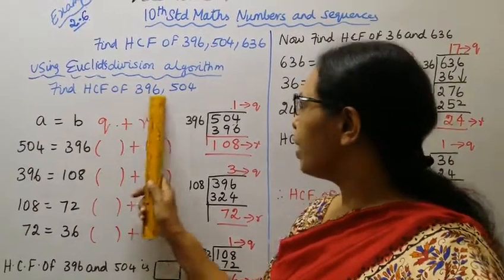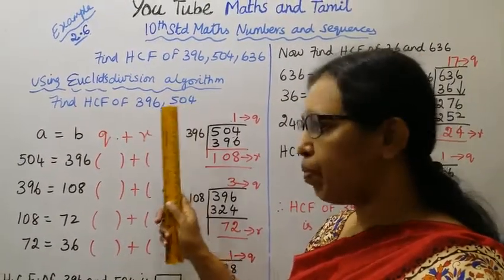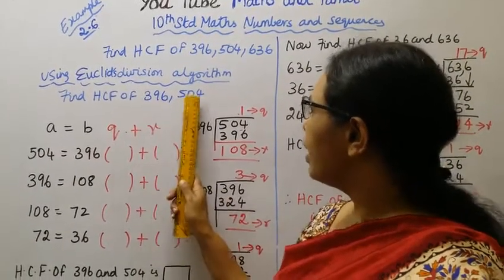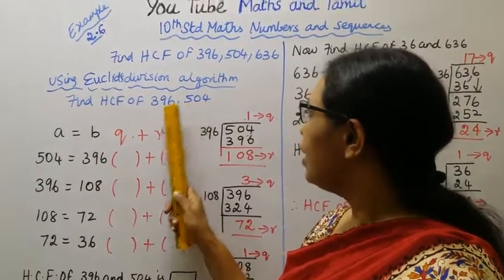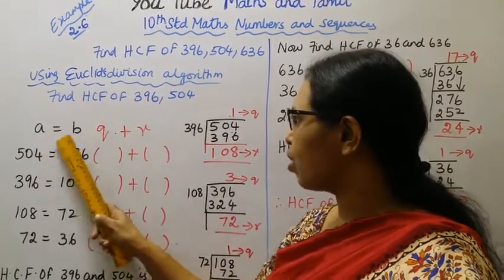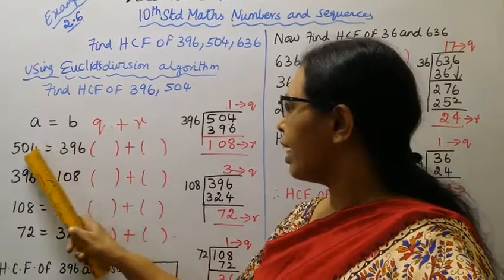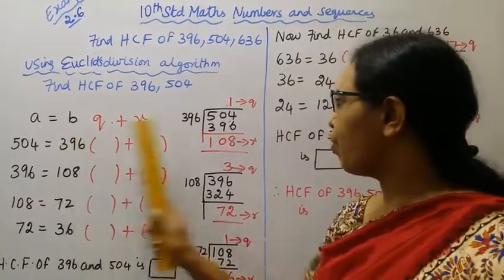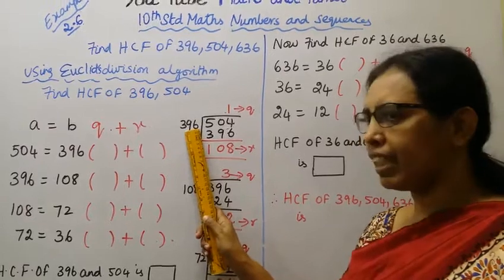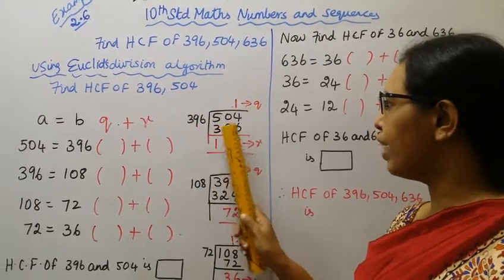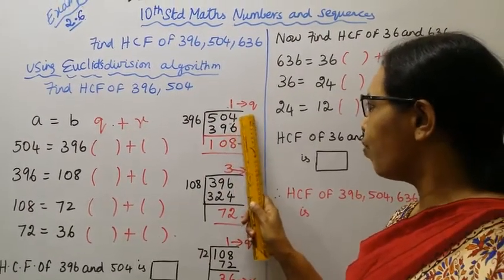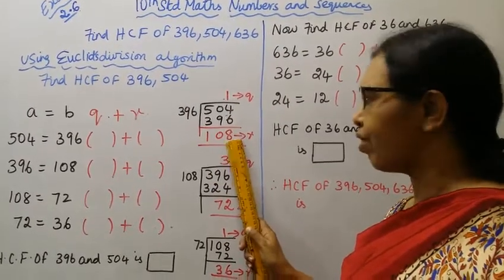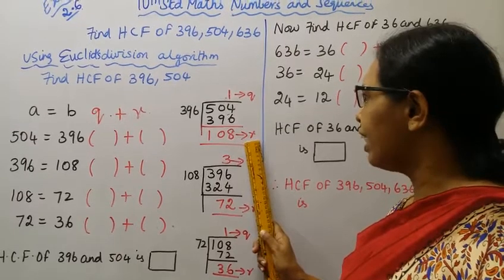First, find HCF of 396 and 504. Here A is equal to 504 and B is equal to 396. Now divide: 504 divided by 396. 1 into 396 is 396. 504 minus 396 gives remainder 108. So quotient is 1 and remainder is 108.